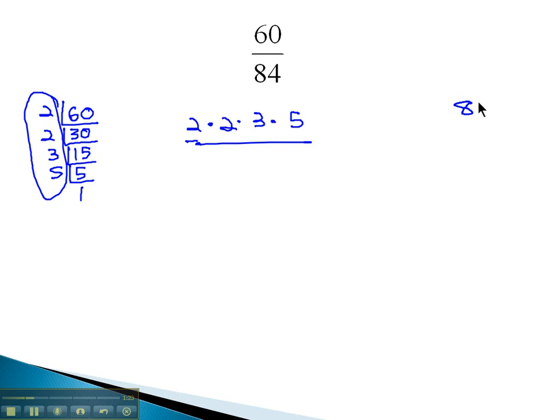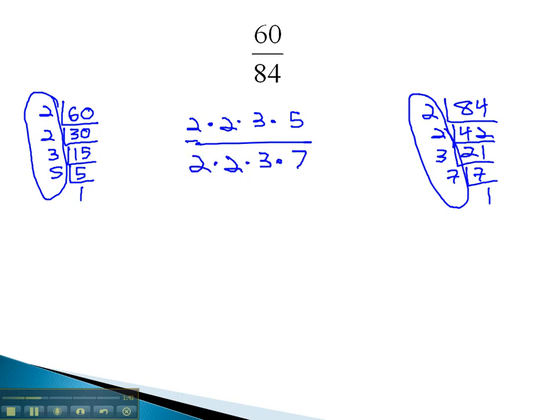Similarly, we need to know what the prime factorization of 84 is. 84 is even, divisible by 2 42 times, still even, divisible by 2 21 times. We know that's divisible by 3 7 times, which is divisible by 7 once. And so we get this for our prime factorization: 2 times 2 times 3 times 7.